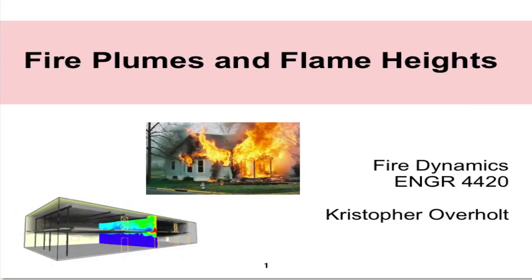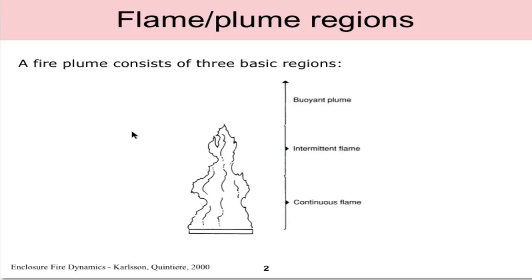To begin we start with the definition of fire plume. The fire plume consists of three basic regions. Near the bottom where the fuel is burning, in this case it could be a liquid pool fire of diesel or kerosene, we have the continuous flame region which is where, as the name suggests, the flame is continuous.